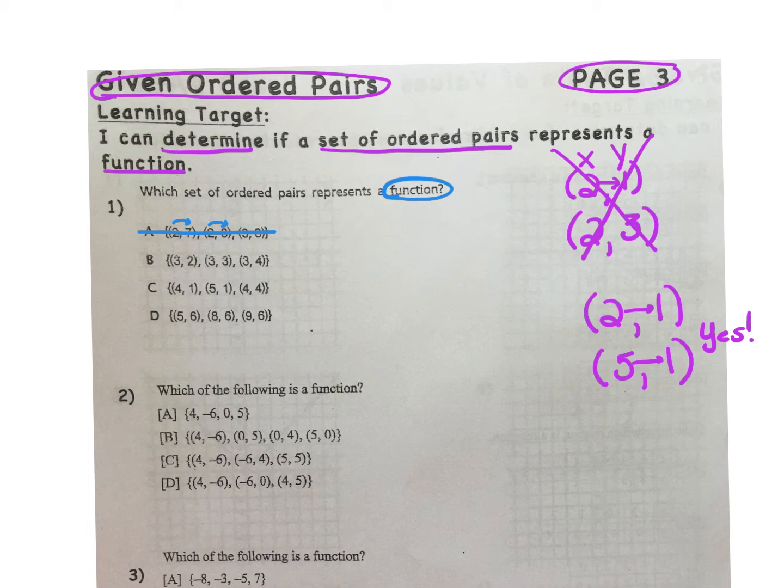In this case, 3 has an output of 2, and it also has an output of 3. In this case, 4 outputs 1, 5 outputs 1, and 4 outputs 4. Well, in this case, we know that 4 cannot output 2 different values. So, that's not a function.